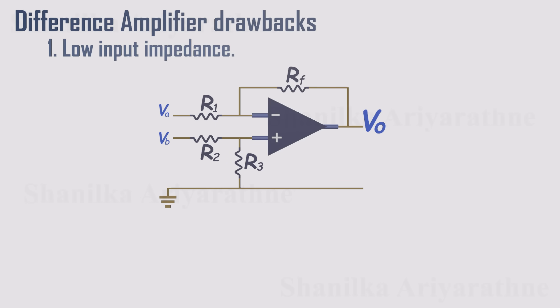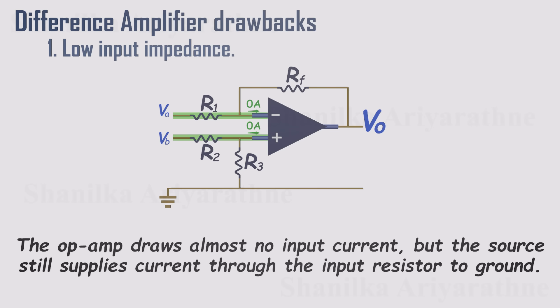The first issue is low input impedance. You might remember from our op amp introduction video that an op amp by itself draws almost no current at its inputs. That's true.